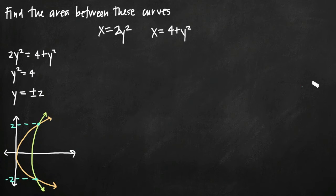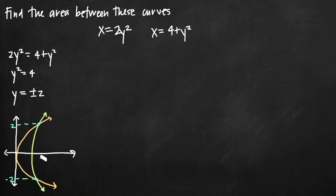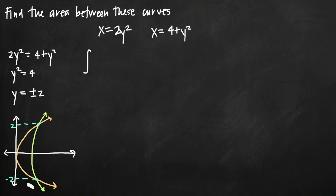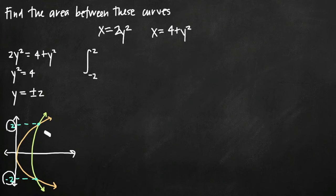Normally when we have an area between curves problem and our curves are normal-looking parabolas that open upwards, the limits of integration are x coordinates. In this case they're y values, so we're going to be integrating from y equals negative 2 to y equals positive 2. Within our integral we want to subtract the left curve from the right curve. So our integral is set up from negative 2 to positive 2 — those are the intersection points — and we take the rightmost curve and subtract the leftmost curve.